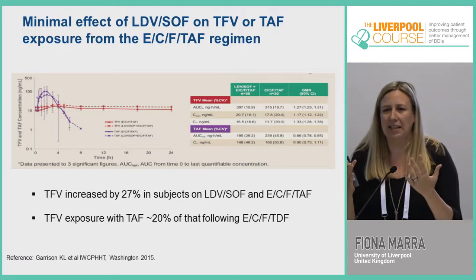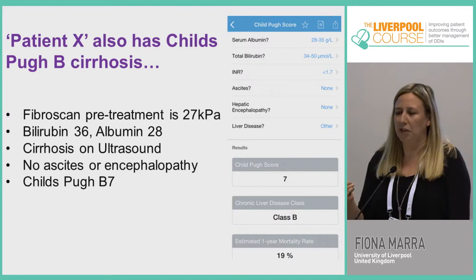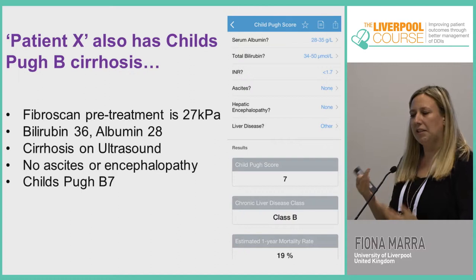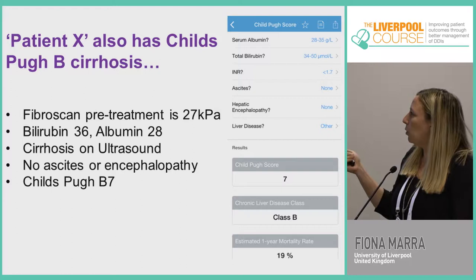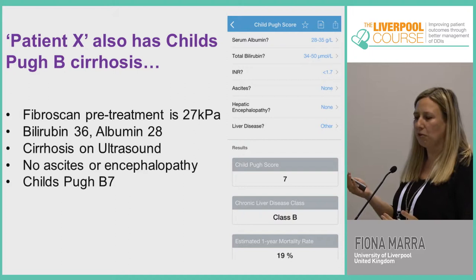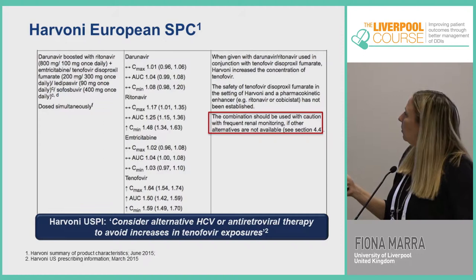When we did the pre-treatment workup, a fibroscan gave a level of 27 — our cut-off for cirrhosis is 12 or more. The bilirubin was raised, the albumin was low, and the patient was referred to gastroenterology who confirmed cirrhosis on ultrasound. There was no ascites or encephalopathy.